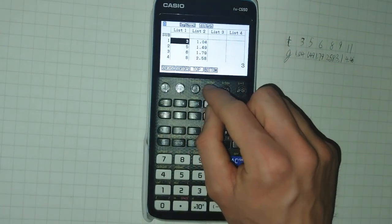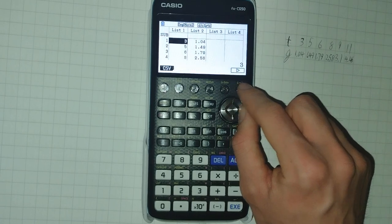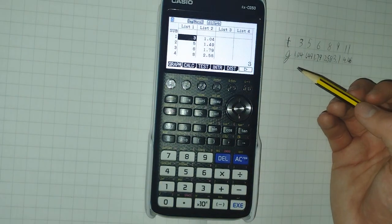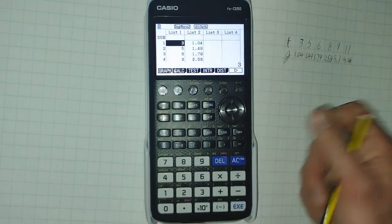You can also jump to the top and bottoms of lists, which can be handy. Now, I actually need to code my G data here into log G.